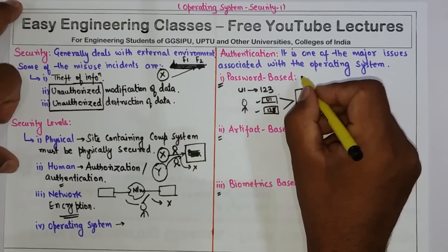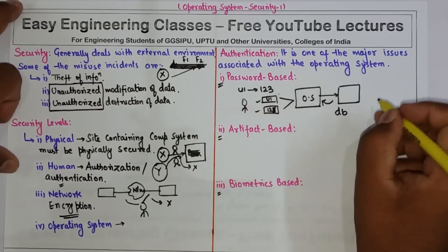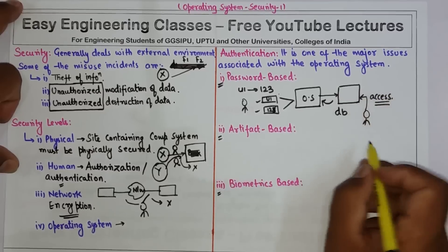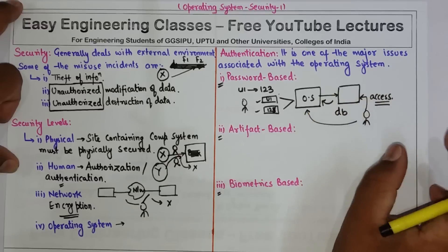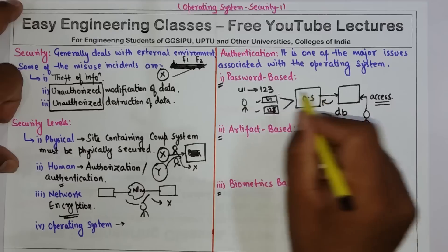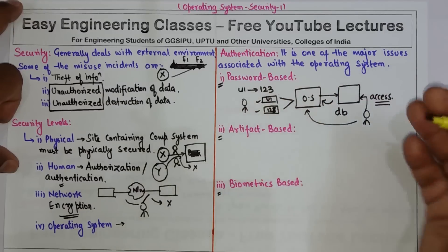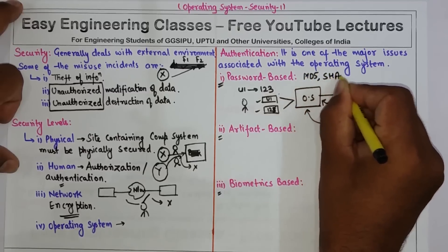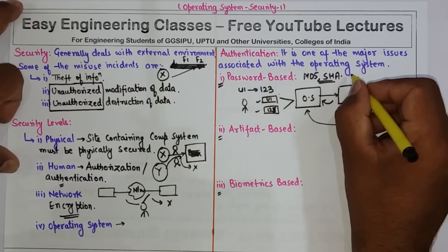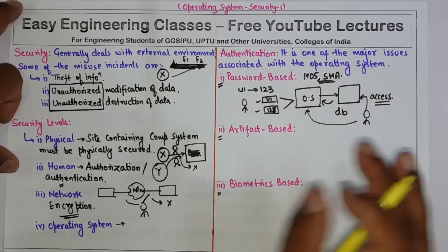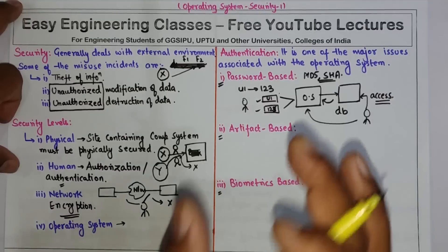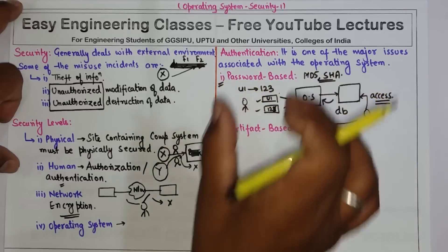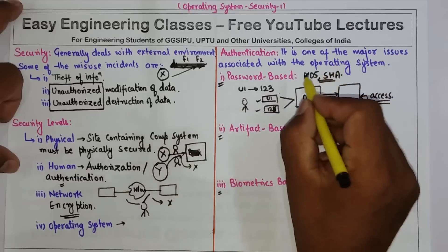The problem with password-based mechanism is that passwords are normally stored in plain text files. If an attacker somehow gets access to the database containing all usernames and passwords, they can gain access to the OS by impersonating a legitimate user. Certain algorithms are implemented for security, like MD5 and SHA, which are hash functions. Instead of storing the password as plain text, the hash value of that password is stored in the database, making it more secure.